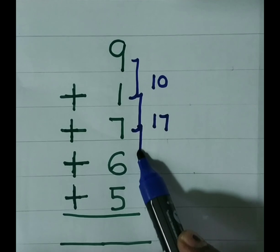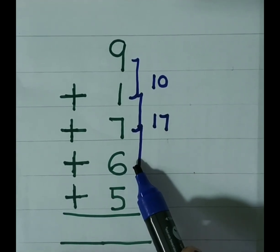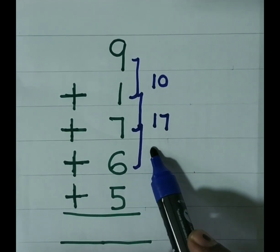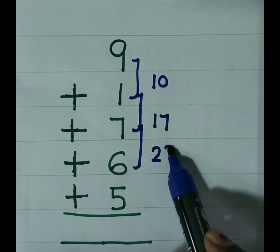It will give us 17. 17 plus 6. 17 keep in mind and add 6 by counting forward. It will give us 23.